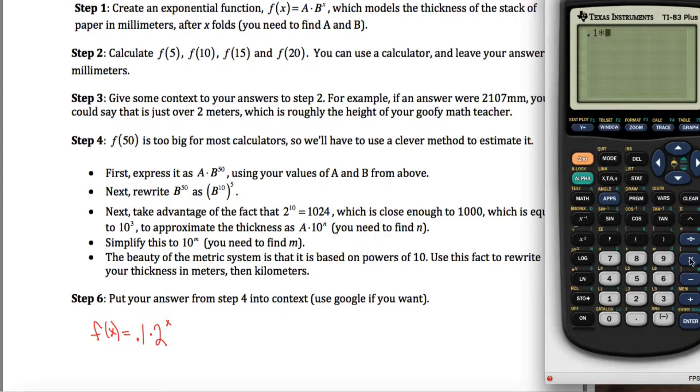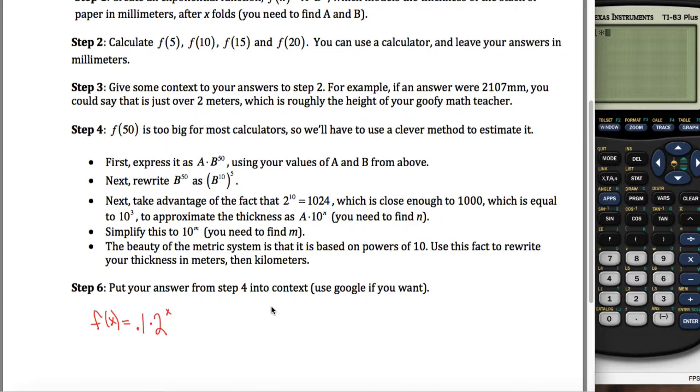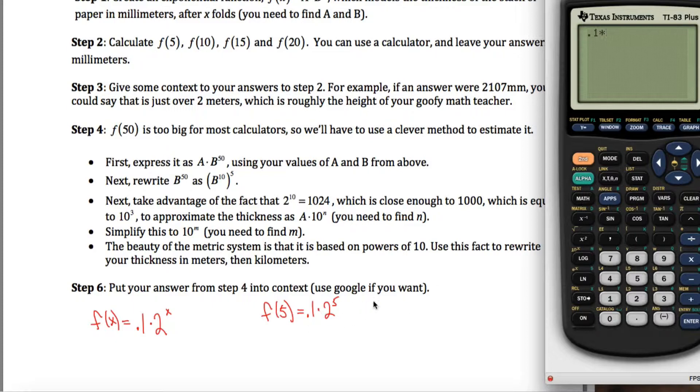And nothing too exciting. 0.1 times, let's see, I guess if I'm figuring out f of 5, maybe I should write it out. f of 5 would be equal to 0.1 times 2 to the 5th power, and to figure out what that's equal to, you might be able to do that in your head. 2 to the 5th power is 32 times 0.1, you get 3.2.